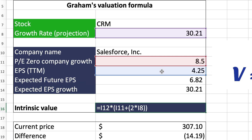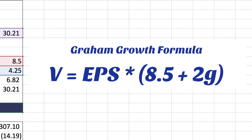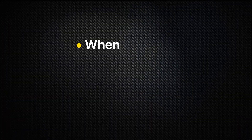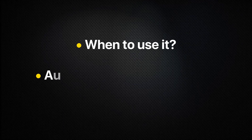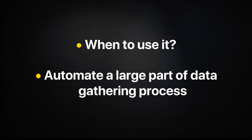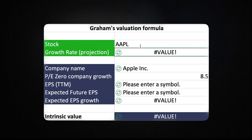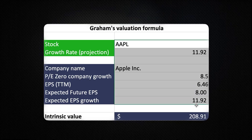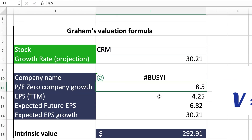On your spreadsheet, you take the EPS of the company for the last 12 months, times 8.5 plus 2 times the expected growth rate. The key to success with this formula is to first know when to use it, and second, automate a large part of the data-gathering process so you can analyze hundreds of stocks very fast and find good investment opportunities quickly.